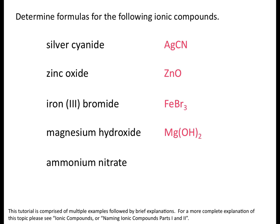Last one: ammonium nitrate. Ammonium is a polyatomic cation — you won't find it on the periodic table. It has the formula NH4 with a charge of plus one. Nitrate: the -ate ending tells you immediately it's a polyatomic ion; nitrate is NO3 with a charge of minus one. With a plus-one cation and minus-one anion, you need one of each, so the formula is NH4NO3.